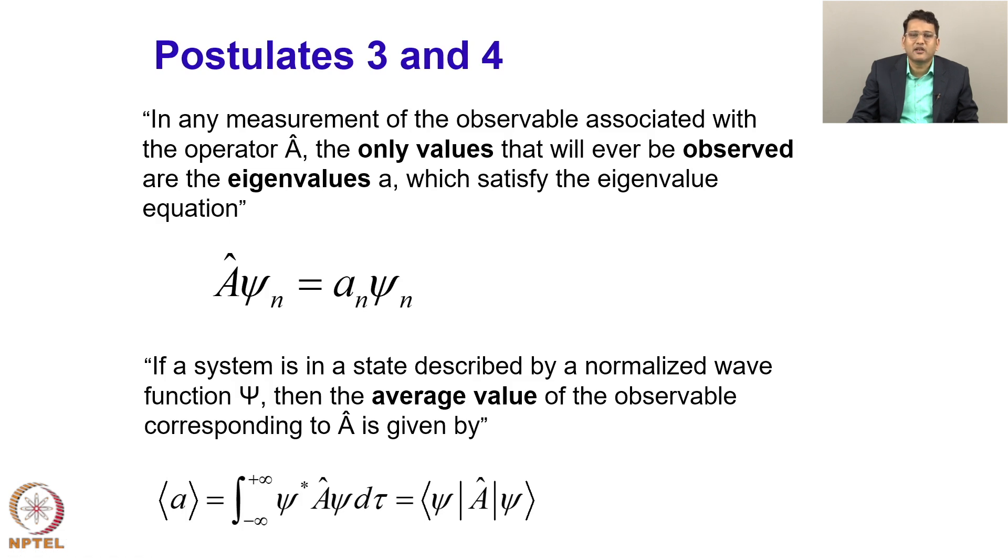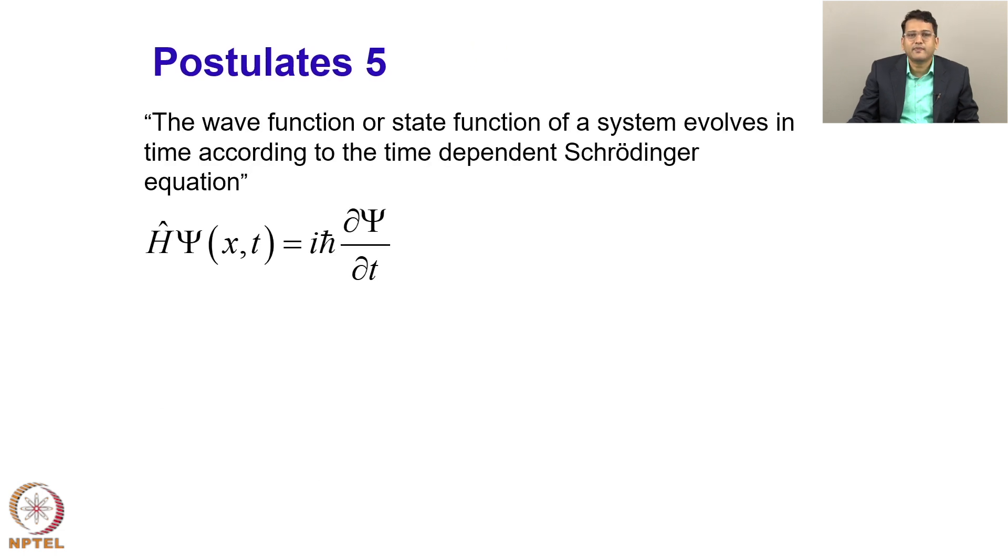So, this principle is used in the calculation of properties in computational chemistry. And postulate 5 says that the wave function or state function of a system evolves in time according to the time dependent Schrodinger equation, and that is given by H psi equals ih cross d psi by dt. So, this is the time dependent Schrodinger equation.